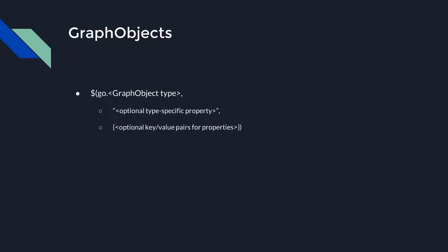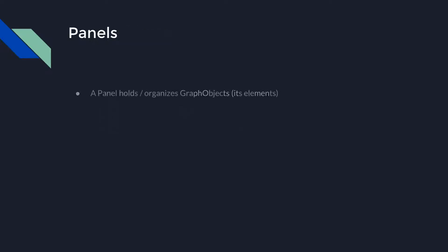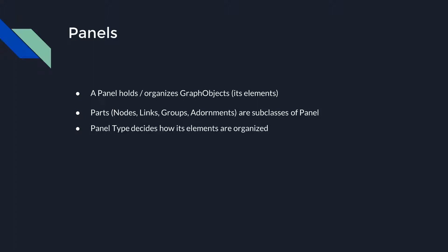You can also pass in a JavaScript object as an argument with key-value pairs describing various properties for the GraphObject. A Panel is responsible for holding and organizing various Go.js GraphObjects — we call these constituent GraphObjects the elements of the panel. Note that Parts are actually Panels. The type of the Panel will decide how its GraphObjects are organized. When building a Part or Panel, you may specify a panel type as the second argument. If no panel type is specified, it acts as a Position panel.